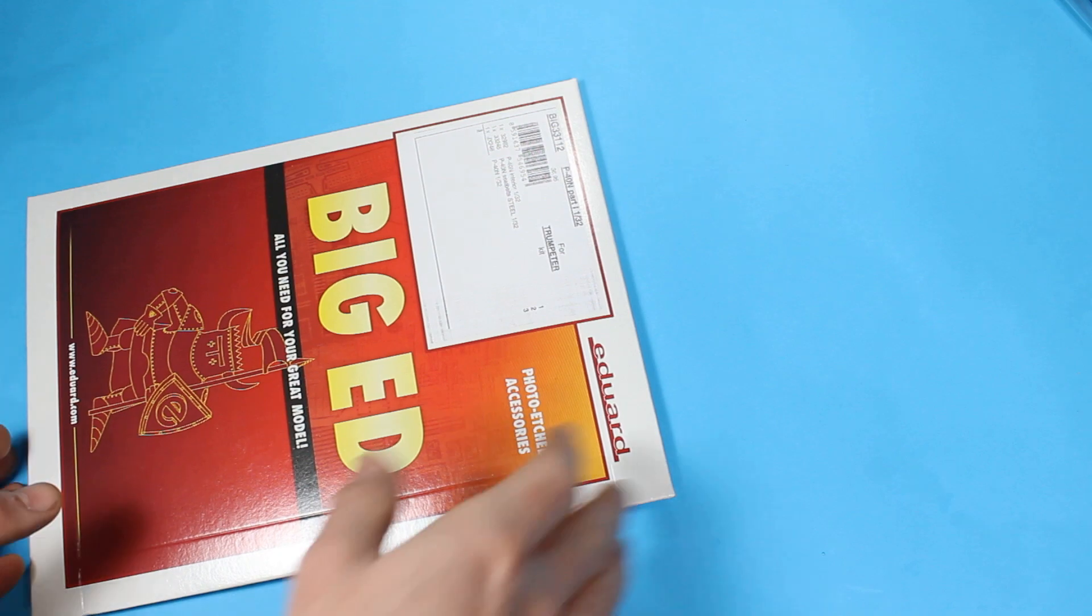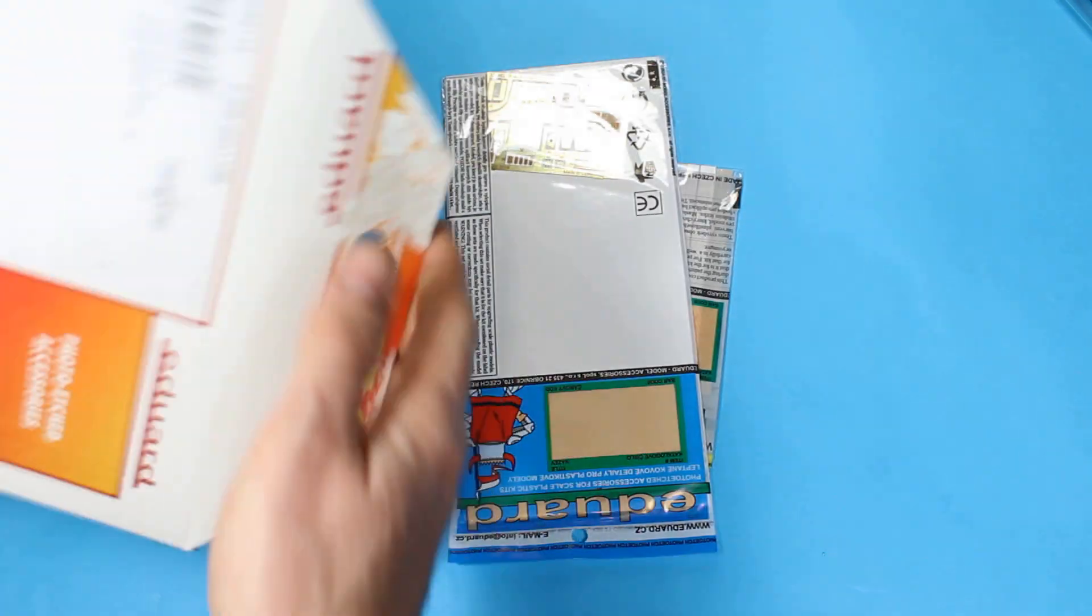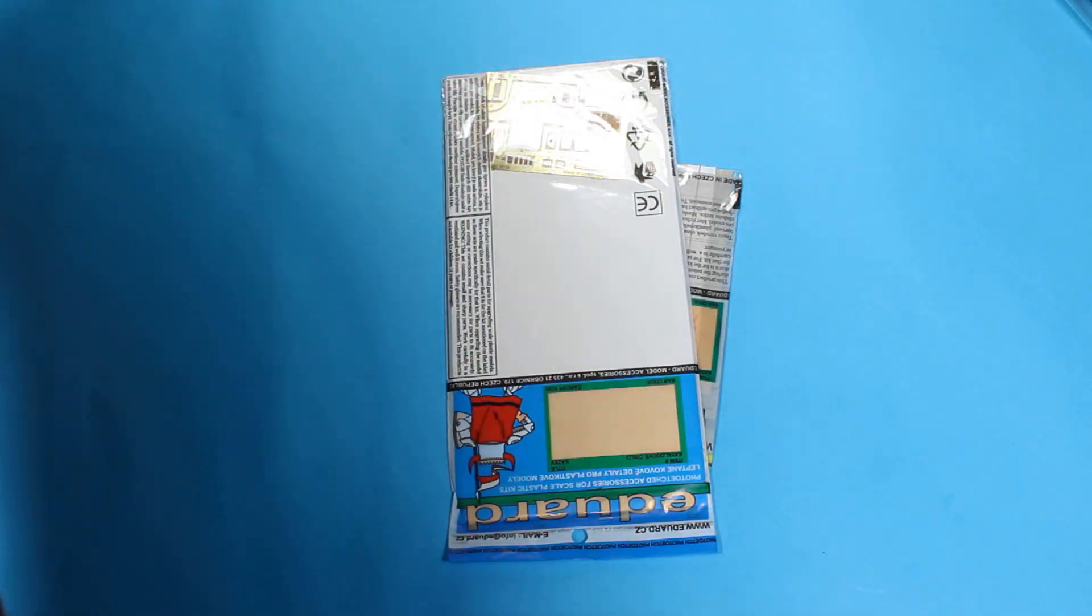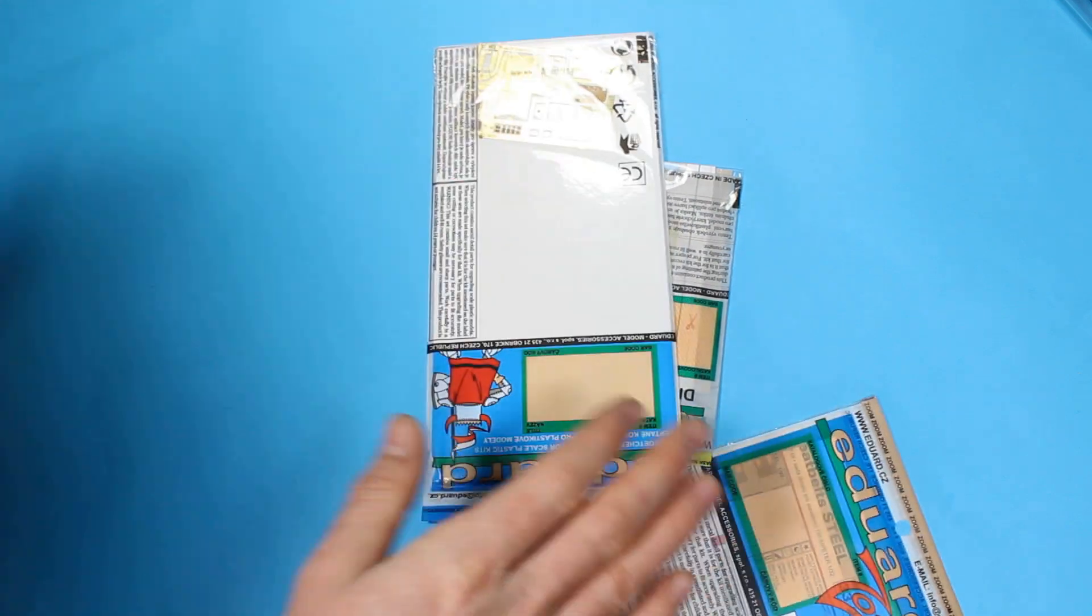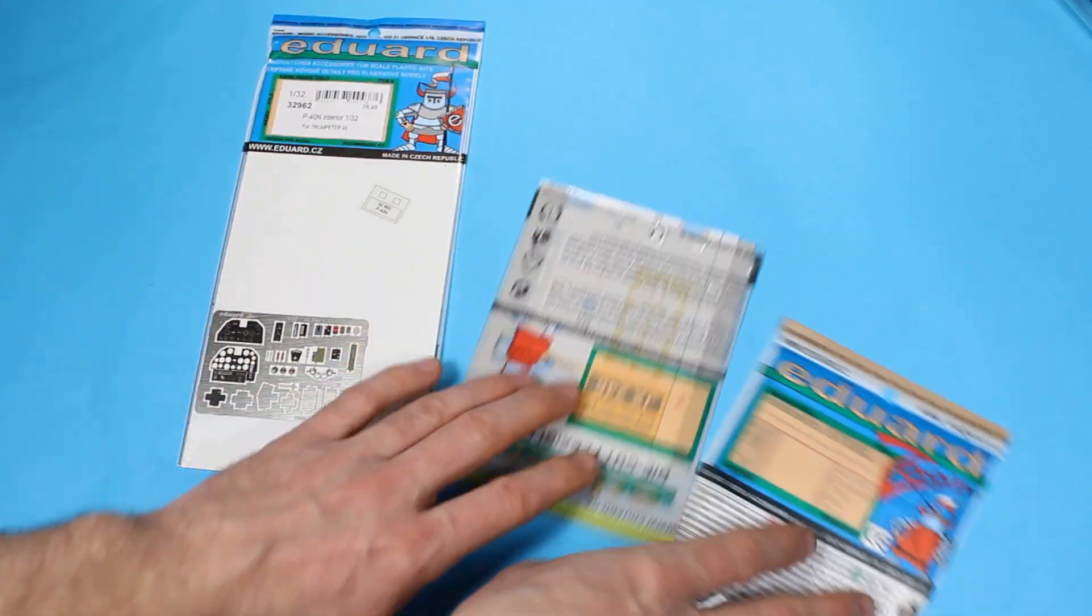Starting off with the Big Ed set, this isn't as daunting as it looks. I think they've done two or three parts for this. This is part one and all this really is, is a couple sets for the cockpit - just belts, canopy masks, and an etch set for the inside.